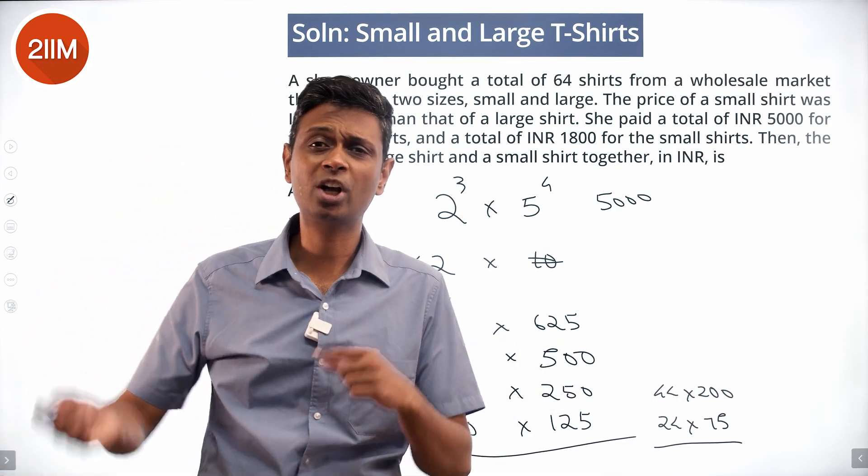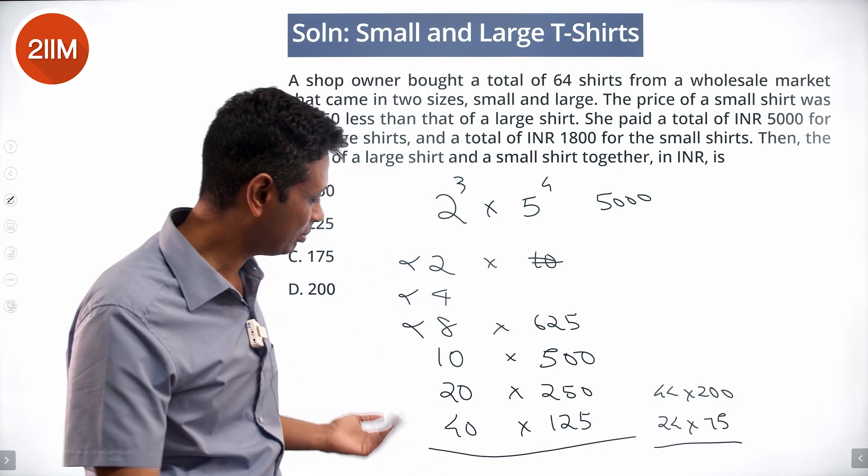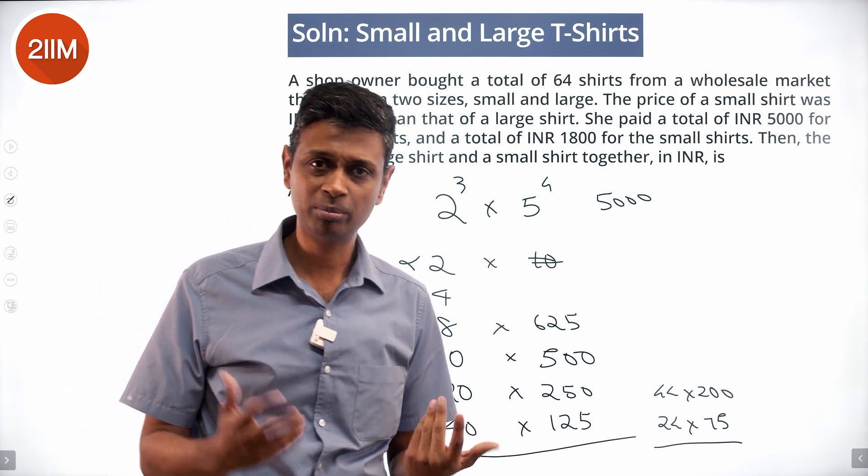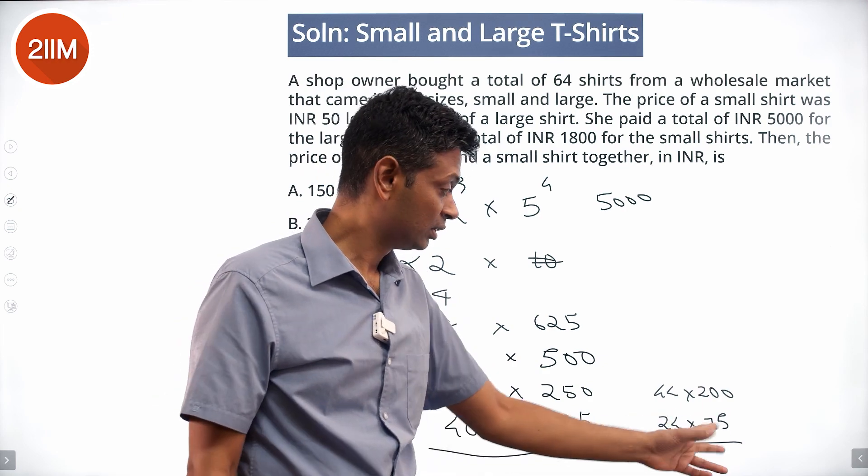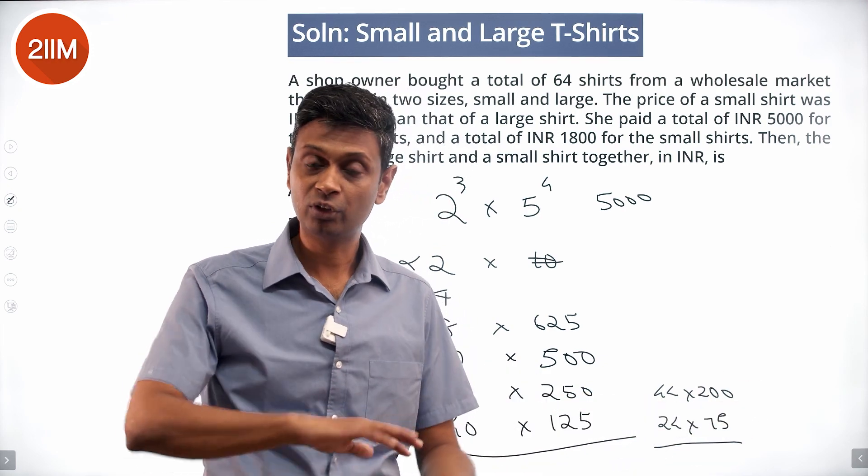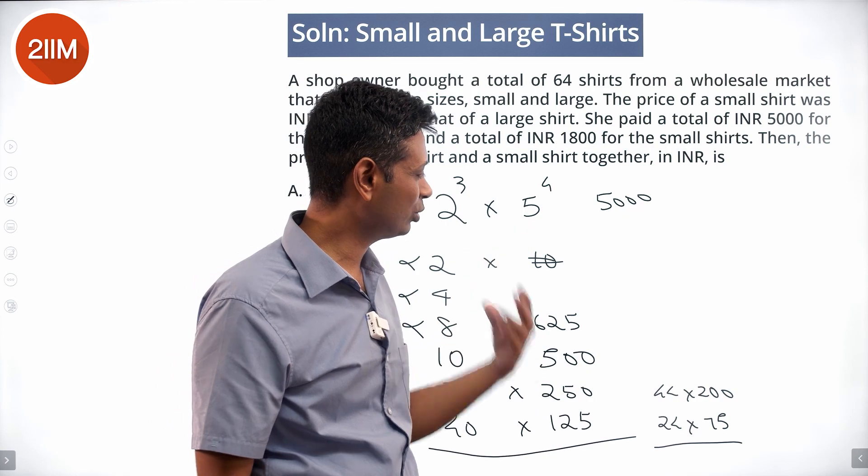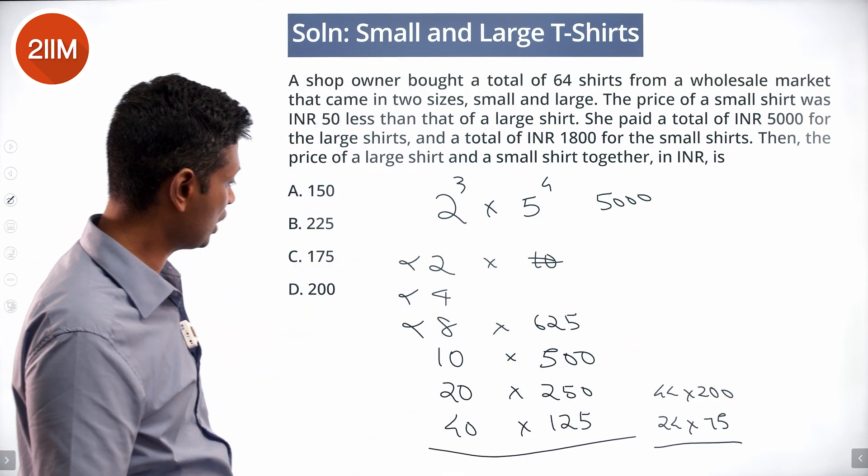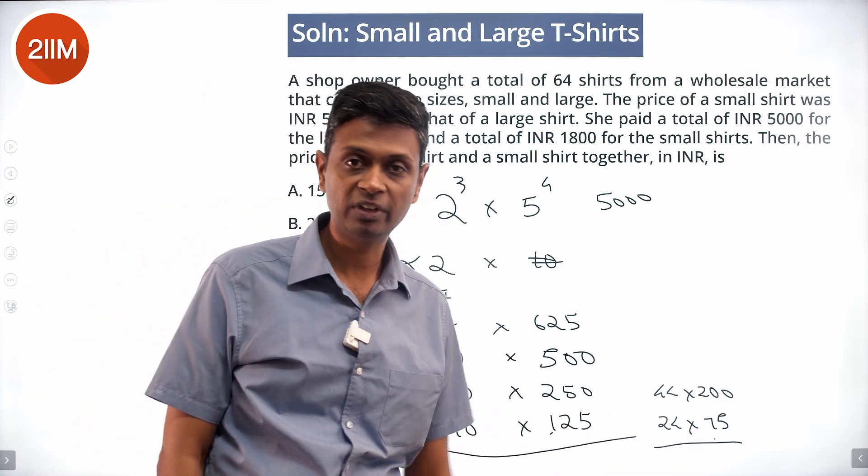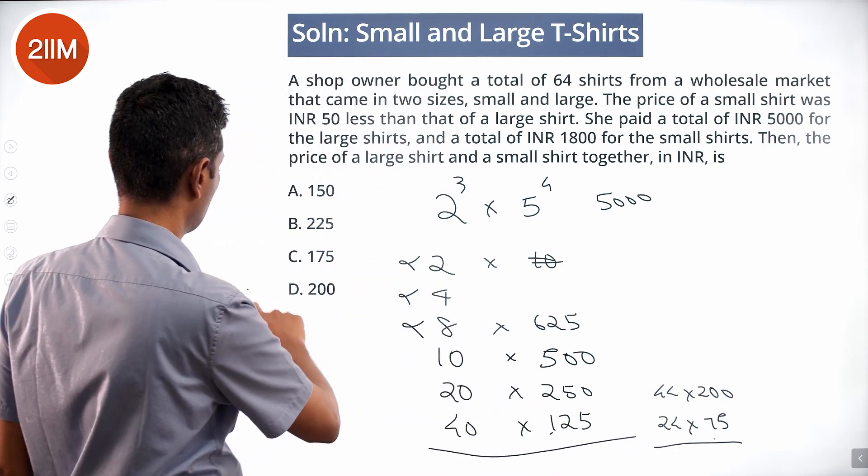Otherwise you have to go to the quadratic and solve it, which is a pain. Having a punt and trying to play around with it is simpler. This number is a multiple of 1800, there should be lots of 3 sitting here. Either break 5000 or break 1800. So the price of a large shirt is 125, small shirt is 75, 125 plus 75 is 200.